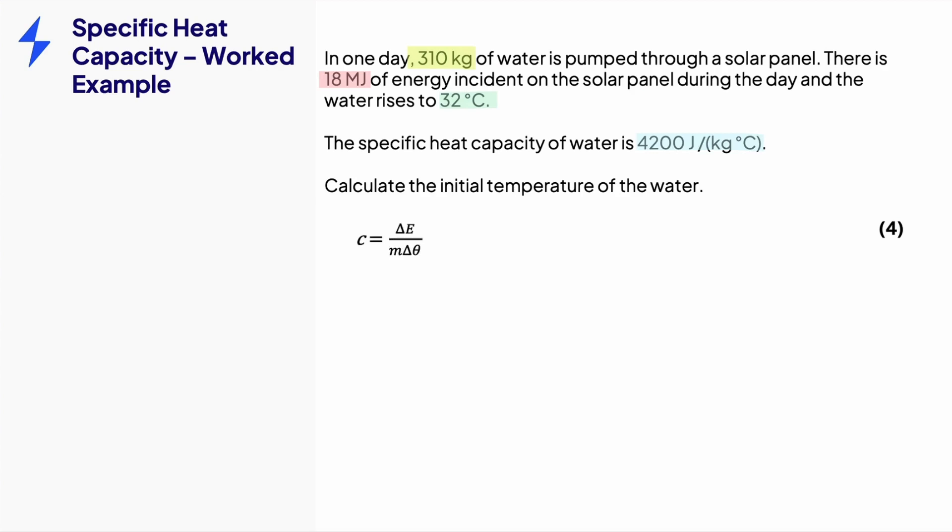Remember, delta theta is the final temperature minus the initial temperature. This is theta f minus theta i, worth one mark. The question asks for the initial temperature, theta i. Rearranging for this gives theta i equals theta f minus delta e over mc. This gives the second mark.